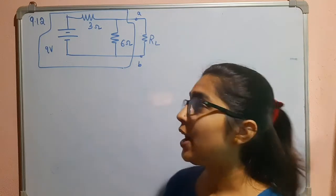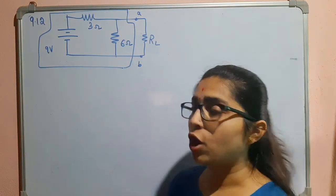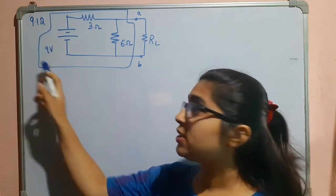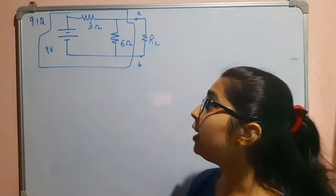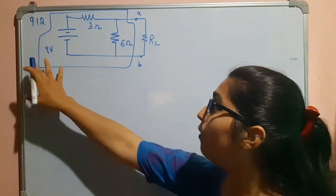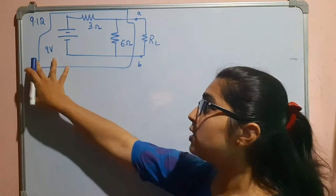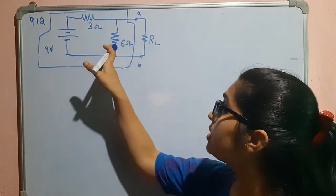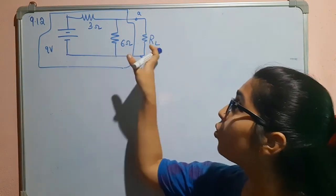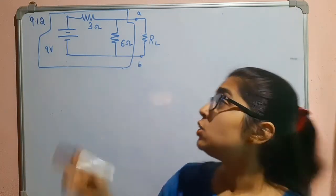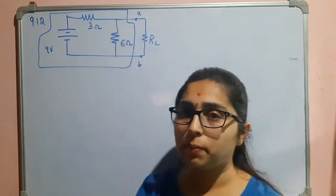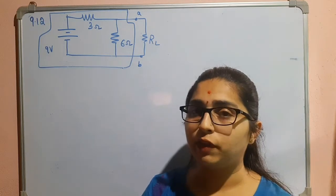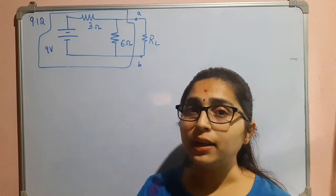Hello everyone. In this question we have to find the Norton's equivalent of this portion which is given inside the box. Here you have one independent source, that is a 9 volt voltage source, then a 3 ohm resistor, a 6 ohm resistor, and a load resistor. These are the marked terminals a and b.